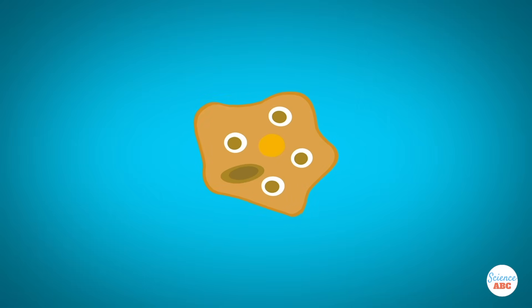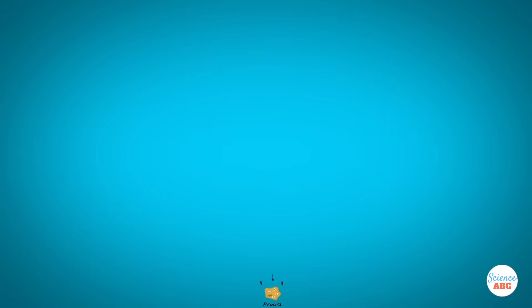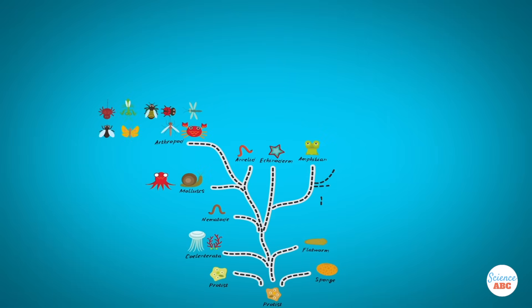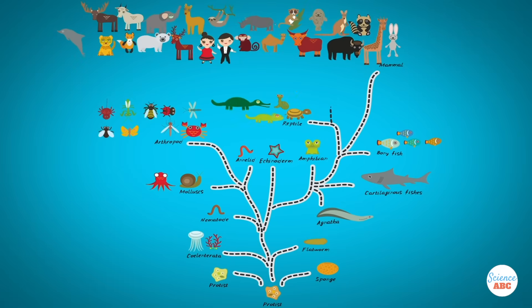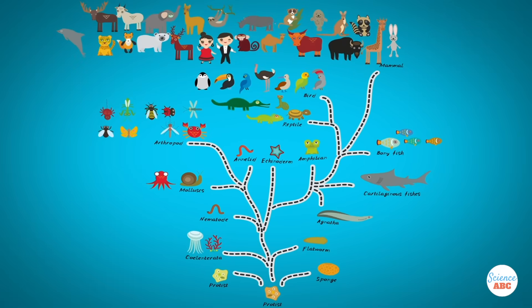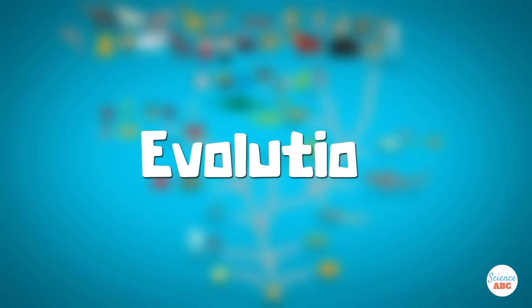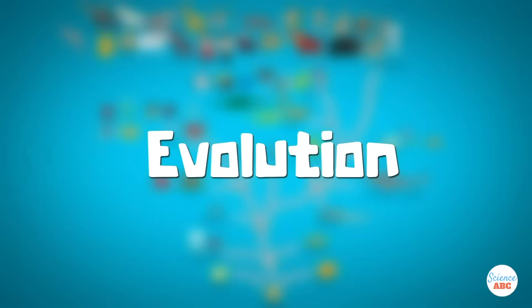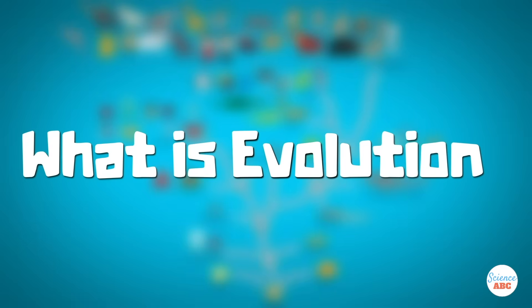Life began from a simple, single cell 4 billion years ago, evolving into the mind-boggling diversity we see today. But how did this all happen? Evolution, yes, but what exactly is evolution, and how does it work?